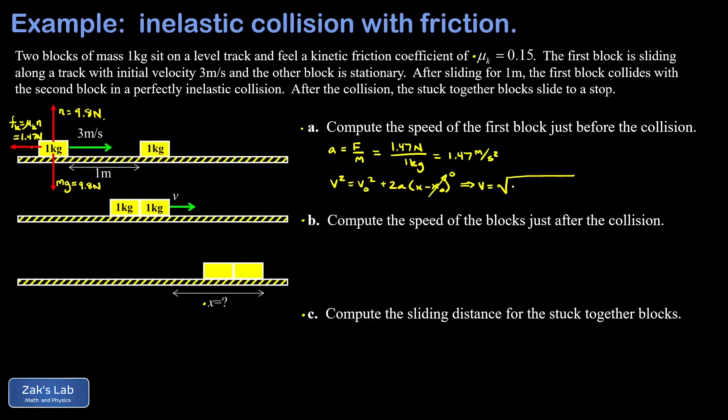So V naught squared, that's three squared. Now our acceleration is going to take a minus sign again because it points to the left. So I have minus 2 times 1.47. And then our sliding distance is one meter. So it's kind of optional to even show that since multiplying by one doesn't change anything. When we run the numbers on this and round to three significant digits, we get 2.46 meters per second just before the collision occurs.